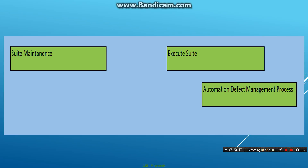Alongside execution, there also has to be some kind of maintenance happening in parallel. From release to release, object properties could change, functionalities could change, or instabilities could be introduced due to environment problems. All of these require time-to-time maintenance, so a maintenance activity runs in parallel.